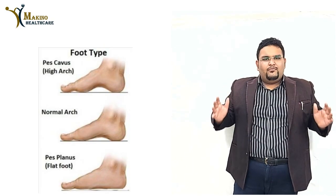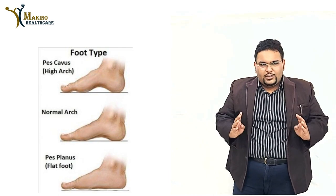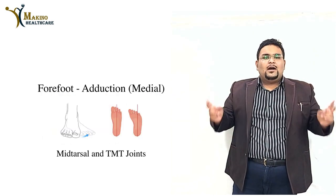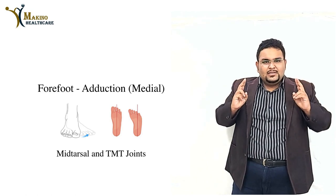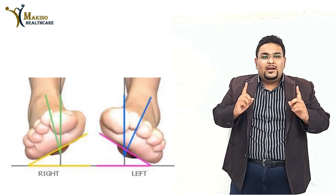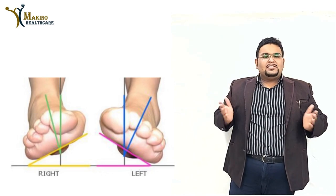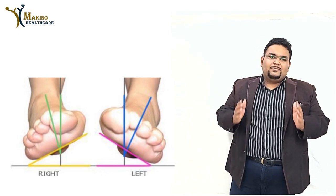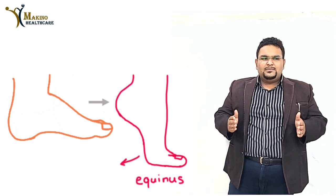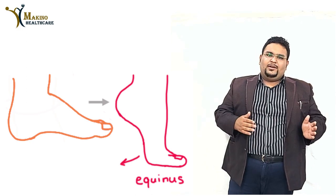Summing up the four important deformities: first, cavus deformity; second, adduction of the forefoot occurring at the talonavicular joint; third, varus deformity occurring at the subtalar joint; and fourth, equinus deformity occurring at the ankle joint.